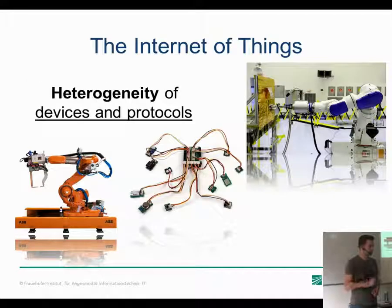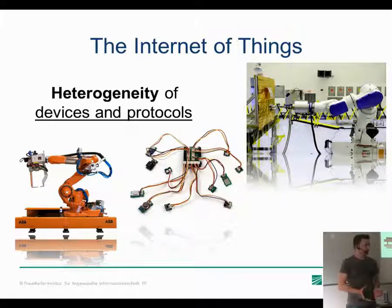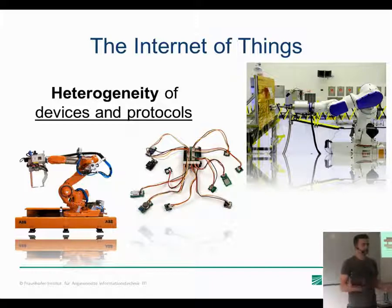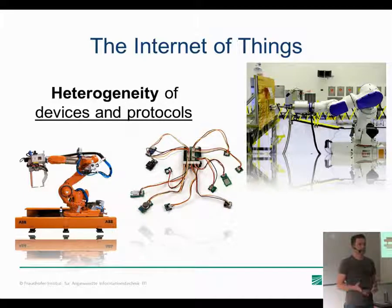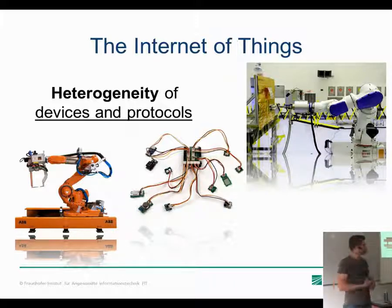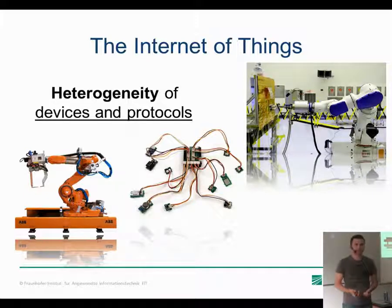The Internet of Things is here and it's going to stay. More and more devices are being connected — predictions say the number will reach 50 billion devices by 2020, and 80% of those will be systems already deployed that are not yet internet-connected. All of these devices are different; they speak different protocols, there are consumer electronic devices and there are industry devices.